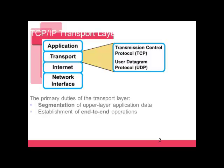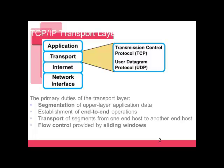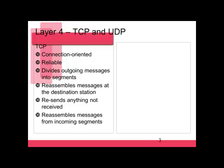The transport layer is also responsible for the establishment of end-to-end operations, the transport of segments from one end-host to another, and flow control provided by sliding windows. We also use reliability with sequence numbers and acknowledgements at the transport layer — but that's only with the TCP protocol.